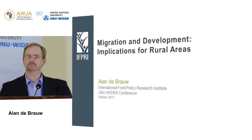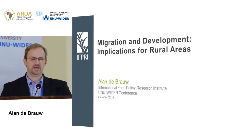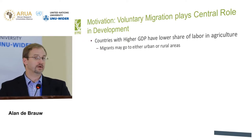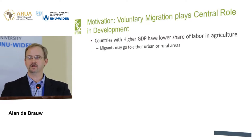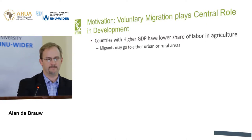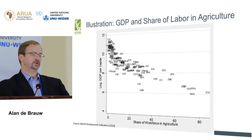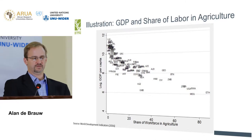We know there's an empirical regularity — Jakob showed this this morning — that countries with higher GDP have a lower share of labor in agriculture. Migrants might go to urban areas or to rural areas. In fact, in the micro data from sub-Saharan Africa we see quite a bit of rural-to-rural migration. Some of you have already seen this picture from Jakob's presentation.